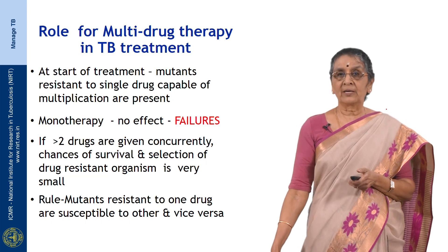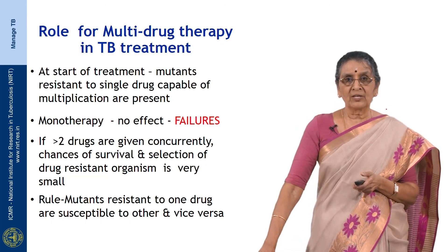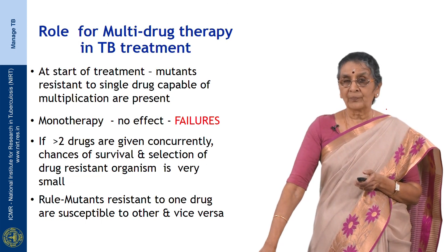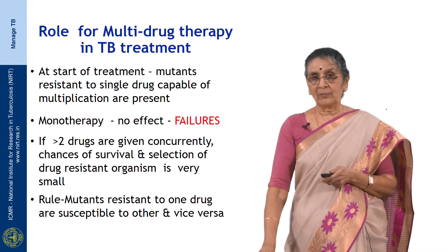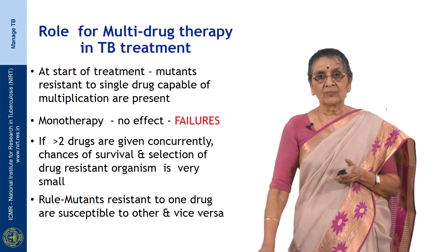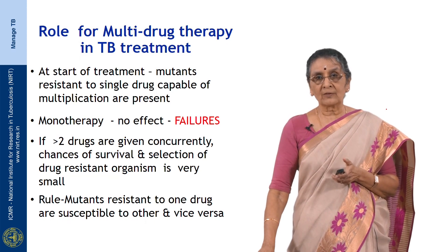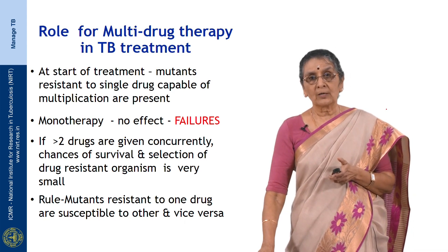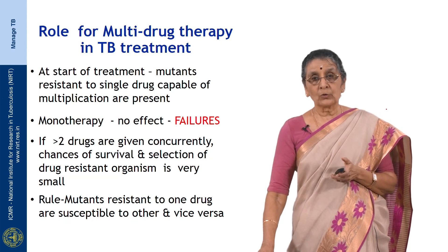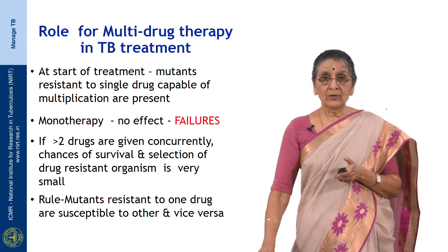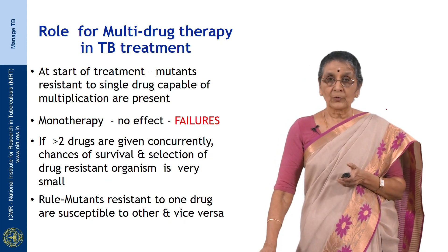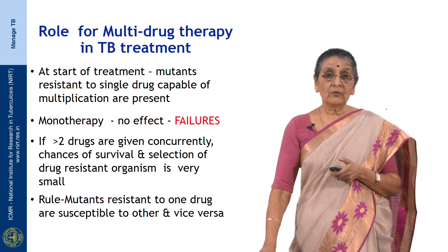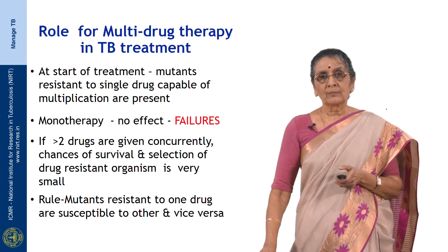Looking at the role of multidrug therapy in TB treatment: at the start of treatment, mutants resistant to a single drug capable of multiplication are present. Monotherapy leads to failure and more resistance. With two concurrent drugs, the chances of selection of drug-resistant organisms are very small. Mutants resistant to one drug are susceptible to other drugs and vice versa. Therefore, we give more than four drugs with at least two bactericidal drugs to achieve killing of all bacteria at the start of treatment.